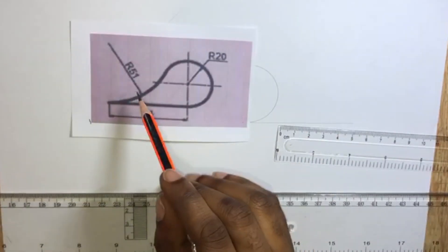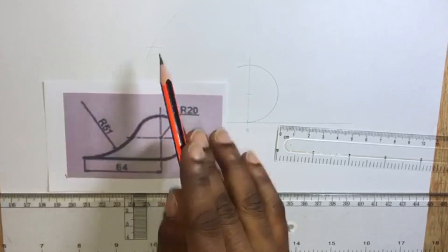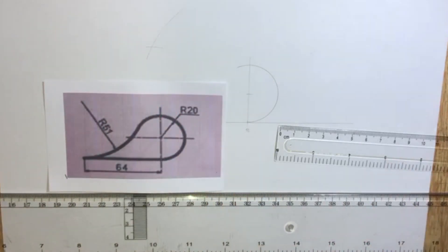The second circle has a radius of 51 millimeters. Now that we have the center we can draw that circle.